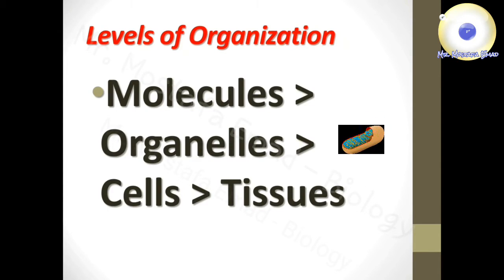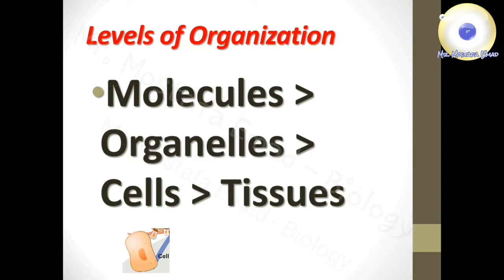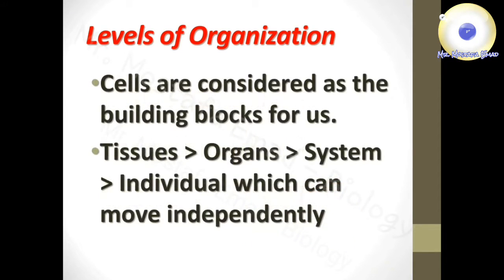Organelles are specialized structures. They are further arranged to make cells. A cell is the building block of living organisms. Cells clump together to make tissues, and tissues can build up organs.